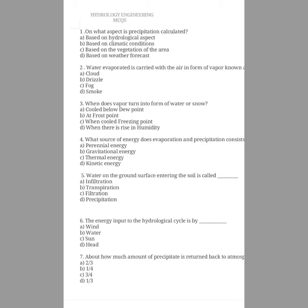Question number four: what source of energy does evaporation and precipitation consist of? The options are perennial energy, gravitational energy, thermal energy, kinetic energy. The answer is perennial energy, because evaporation and precipitation is a natural continuous process and therefore constitutes a perennial source of energy. Both evaporation and precipitation come under the hydrological cycle, and the source of energy for this process is perennial energy.